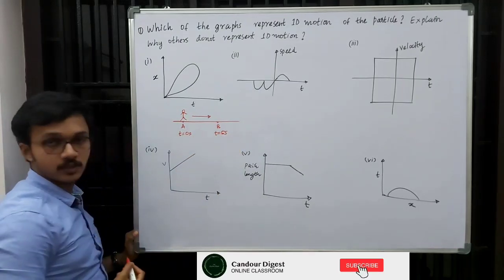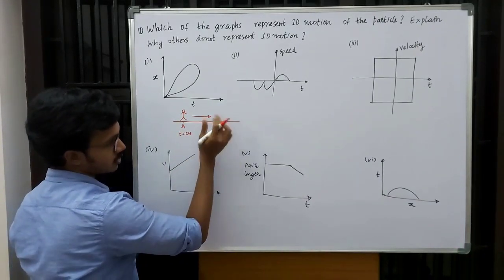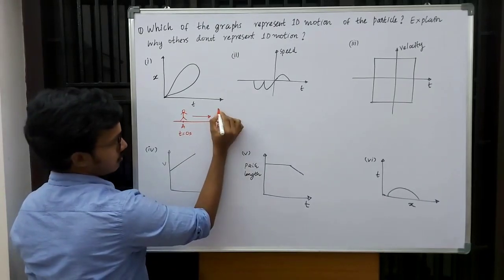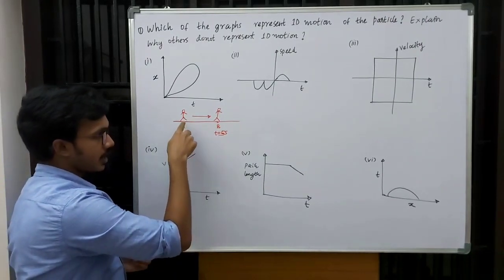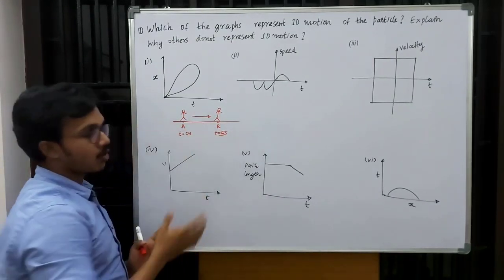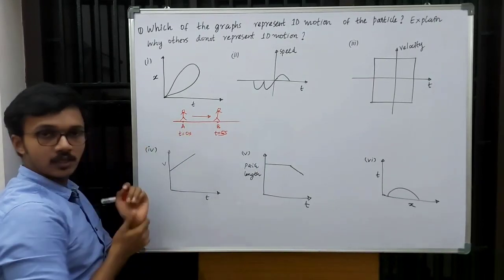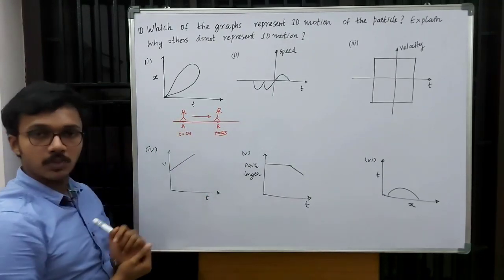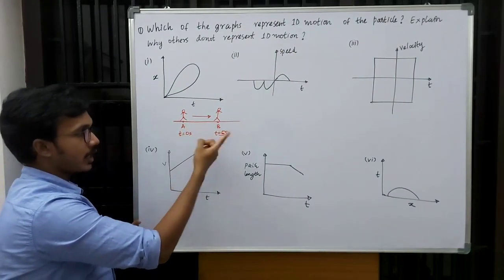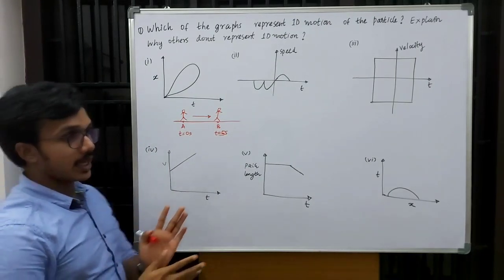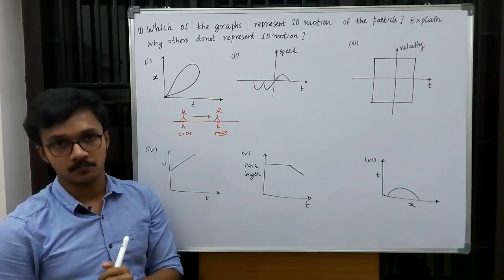Then after some time I reached B, say at time t equals 5 seconds. So I started my journey at point A when time was equal to 0, then after 5 seconds I reached point B. At time t equals 0 second, I am at point A, and at time t equals 5 seconds, I am at point B. At any given time, I can only occupy one position. It is not possible to occupy two positions at a certain time.